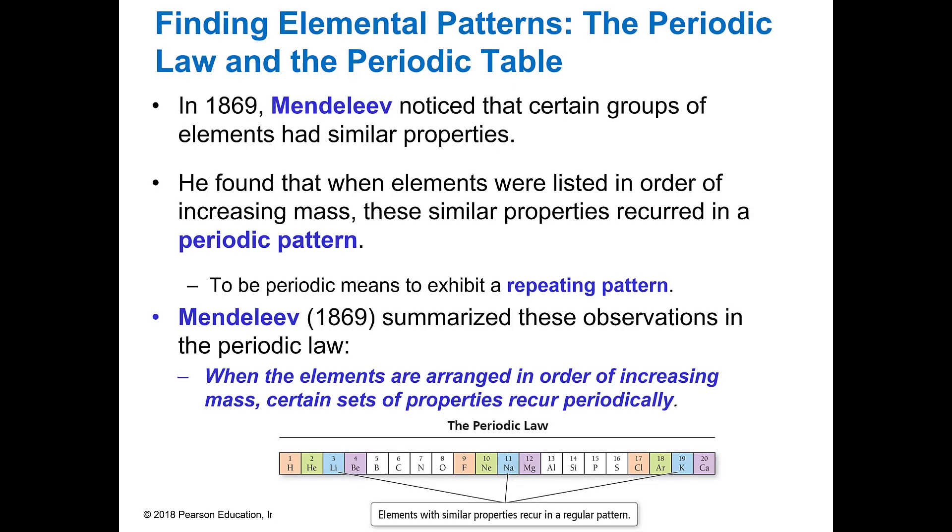So in 1869 Dmitry Mendeleev noticed that there were certain groups of elements that were similar. And so he tried to put together something for his students where they could look and see these all had these characteristics in common. And when he started doing it he noticed that there was a periodic or repeating pattern to it.